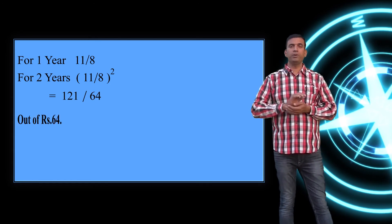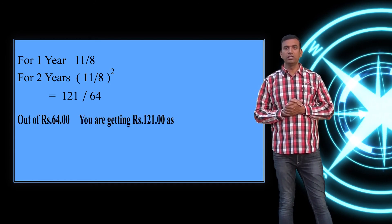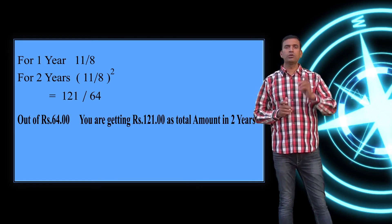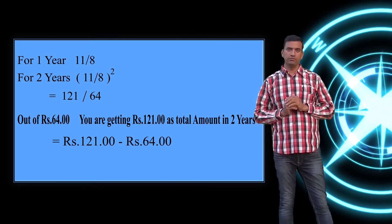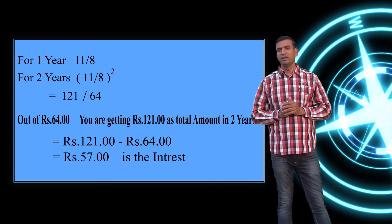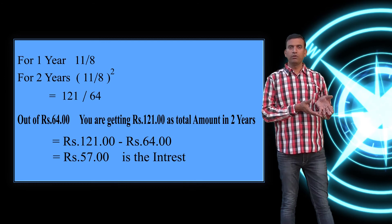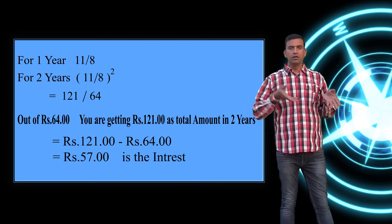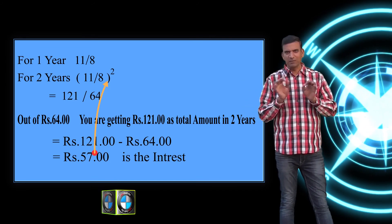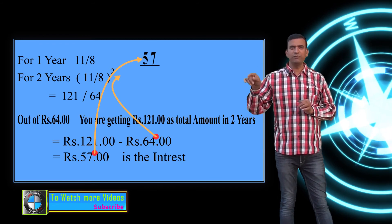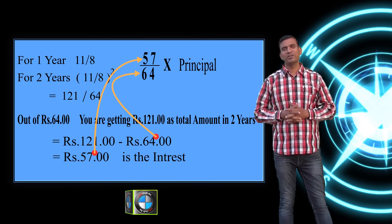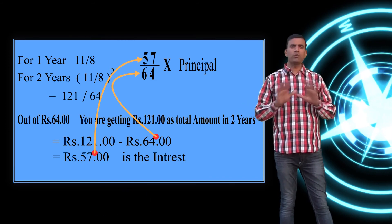So if the principal is 64, the interest is 121 − 64 = 57 rupees. If the principal is x, the compound interest = (57/64) × principal. This method makes it quite easy to find compound interest for bad rates.